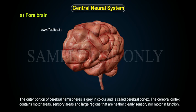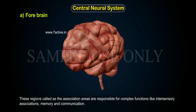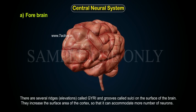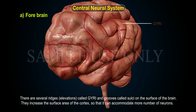The cerebral cortex contains motor areas, sensory areas and large regions that are neither clearly sensory nor motor in function. These regions, called association areas, are responsible for complex functions like intersensory associations, memory and communication. There are several ridges, elevations called gyri and grooves called sulci on the surface of the brain.